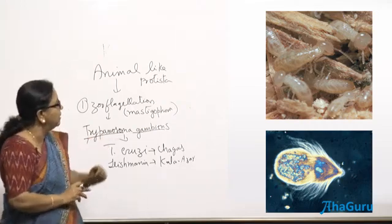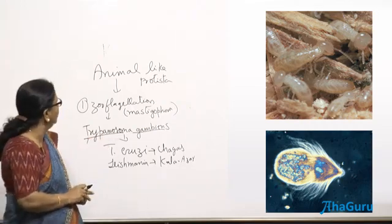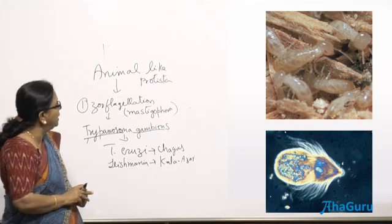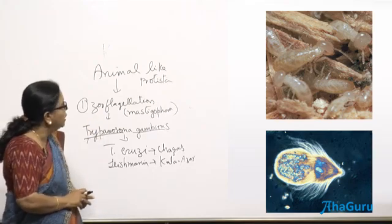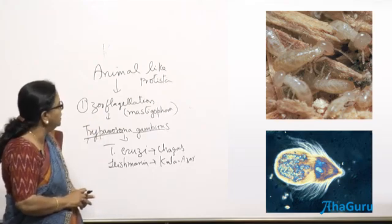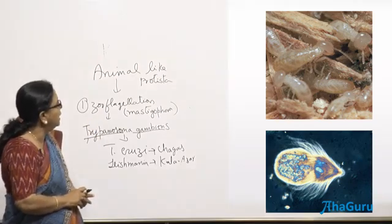It is a symbiotic association between Trichonympha and termites where they benefit mutually. This is one example of zooflagellates.